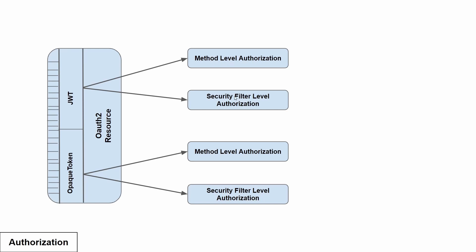We will see the method level authorization in detail here. I will not cover the other three authorization ways right now — I'll see if I can do it later. Now let's try to understand the method level authorization in detail for JWT.